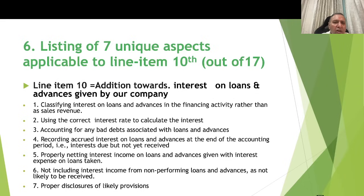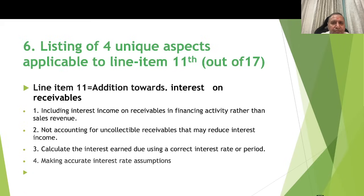For line item 10 — addition towards interest on loans and advances given by the company — aspects include classifying interest on loans and advances as a financial activity rather than sales revenue; using the correct interest rate to calculate interest; accounting for any bad debts associated with loans and advances; recording accrued interest on loans and advances at the end of the accounting period; properly netting interest income on loans and advances against interest expense on loans taken; not including interest income from non-performing loans and advances as it is unlikely to be received; and proper disclosure of likely provisions.